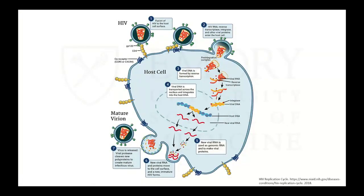Briefly reviewing the life cycle of HIV: it starts with fusion of the mature virus particle into the cell. The virion releases its single-stranded RNA, reverse transcriptase, integrase, and other proteins into the cell. Reverse transcriptase converts RNA into double-stranded DNA, which is transported into the nucleus, where integrase integrates it into the host DNA. It's then replicated into RNA, creating proteins and viral RNA, all packaged in the cell membrane and released as a new mature virion.